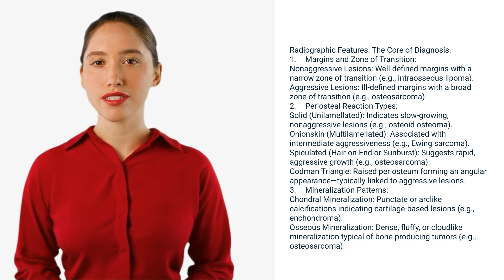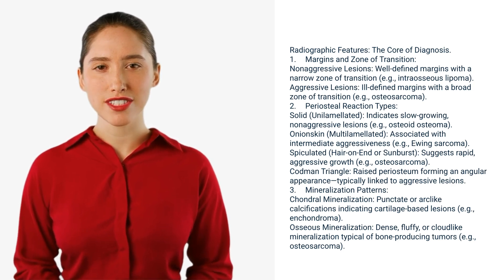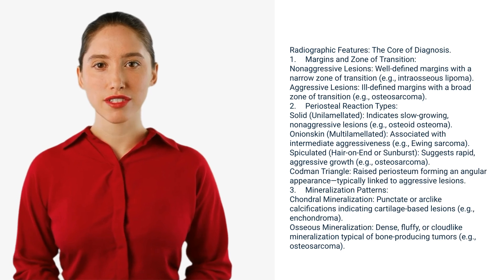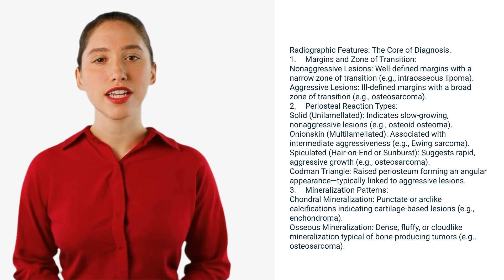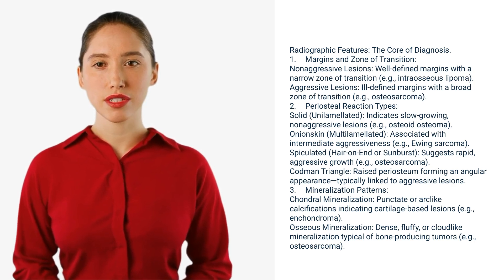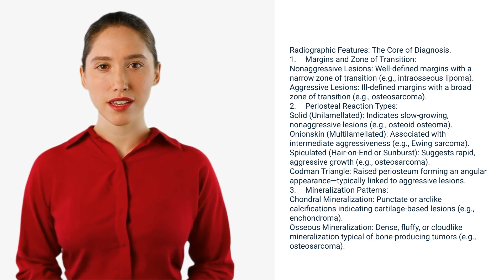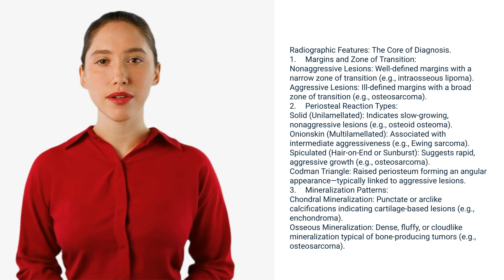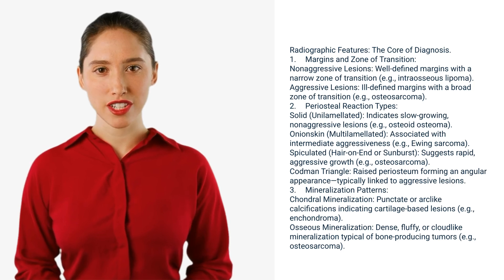Second, periosteal reaction types: solid (unilaminar) indicates slow-growing, non-aggressive lesions — for example, osteoid osteoma. Onion skin (multilaminar) is associated with intermediate aggressiveness — for example, Ewing sarcoma. Spiculated (hair-on-end or sunburst) suggests rapid aggressive growth — for example, osteosarcoma. Codman triangle — raised periosteum forming an angular appearance — is typically linked to aggressive lesions.